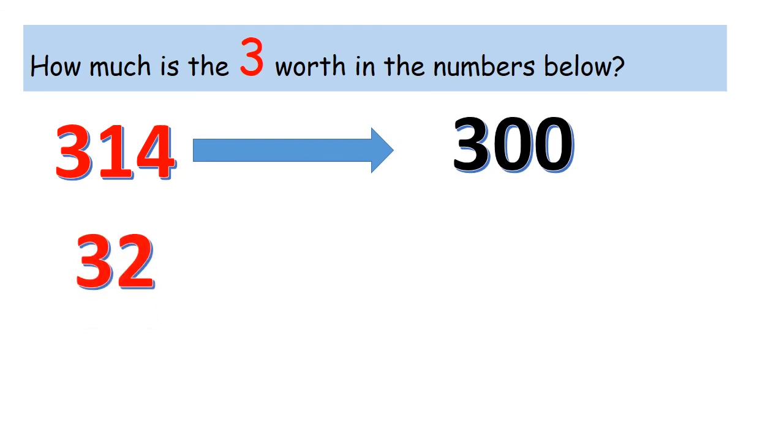What about the number thirty-two? Two at the ones place, and three at the tens place. So, three times ten is thirty. Good job.